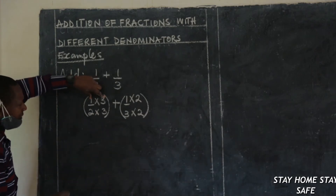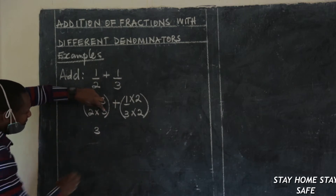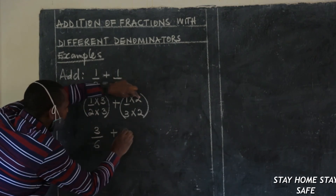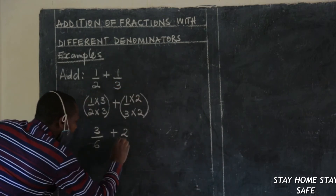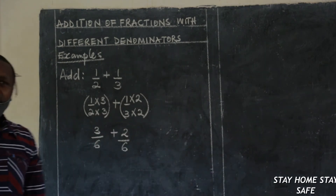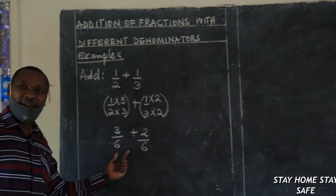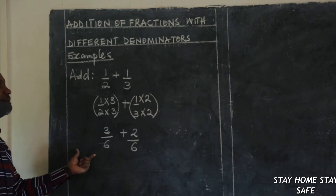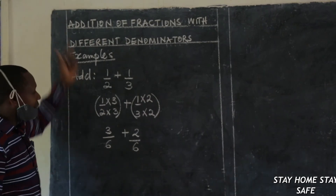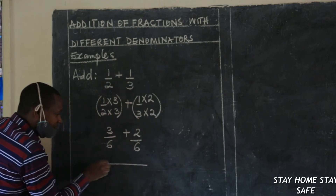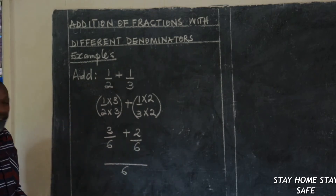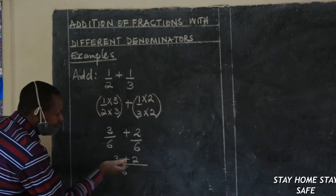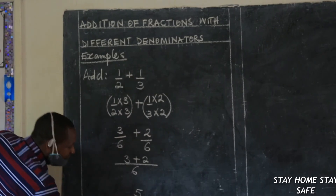Now 1 times 3, what do you get? Somebody is saying 3. What about 2 times 3? Somebody is saying 6. We are adding 1 times 3 over 2 times 3. Have you observed anything? What have you observed on the denominators? Somebody is saying they look alike. Do you know why they look alike? It is because of the equivalent fraction method I have applied. So now, where do we go? We go back to where we started from: addition of fractions with the same denominators, because the denominators are already the same here. Keep the common denominator 6. What do you do to the numerators? Add them: 3 plus 2. Finally, let's have the final answer — it is 3 plus 2. What do you get? 5. And you will keep the common denominator 6.